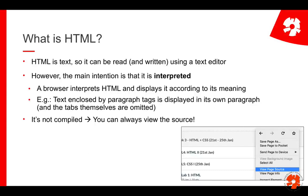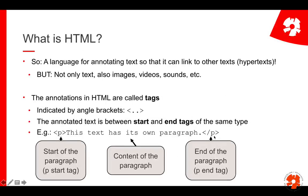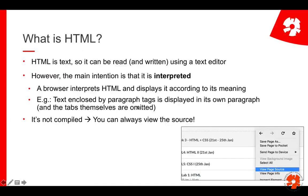HTML is text, so it can be read and written using any text editor. The main intention is that it's interpreted — you don't want to look at source code, but usually you want to look at the result. That's what a browser does. If you have Firefox or Chrome, they interpret HTML code and instead of showing you all the tags, they show you the formatted result. HTML is not compiled, just interpreted. This means whenever you look at a website, you can actually view the source code. In Firefox for example, you can right-click and say 'view page source' — Chrome has something similar.